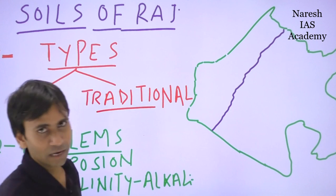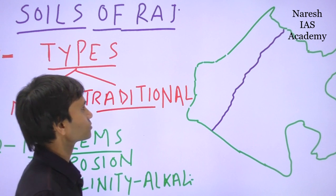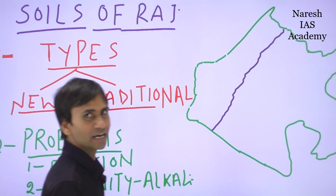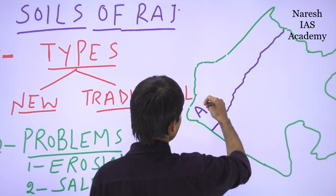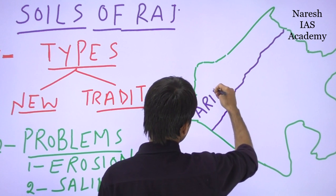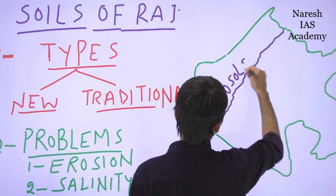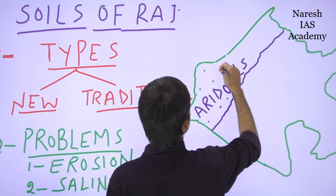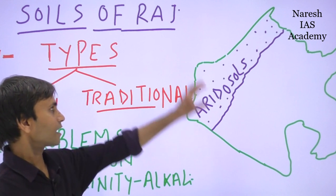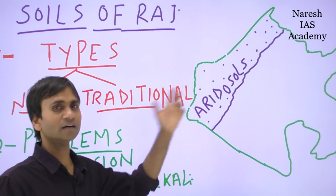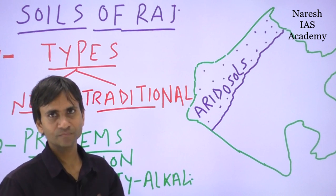The arid climatic region of Rajasthan - the new classification of soils in this region is named Aridosoils. The desert or western Rajasthan includes Aridosoils as the type under the new classification of soils.